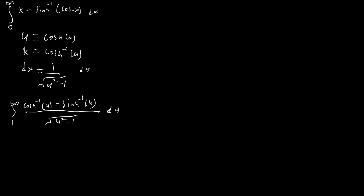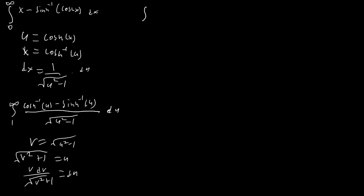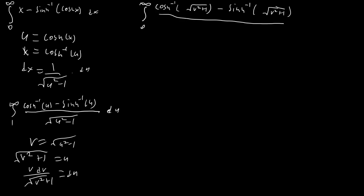To get rid of the u²−1 in the denominator, we substitute v = √(u²−1). That means u = √(v²+1) and du = v dv / √(v²+1). When u = 1, v = 0. The √(u²−1) on the bottom becomes just v, and combined with the v from du, those cancel, leaving the integral from 0 to ∞ of (cosh⁻¹(√(v²+1)) − sinh⁻¹(√(v²+1))) / √(v²+1) dv.